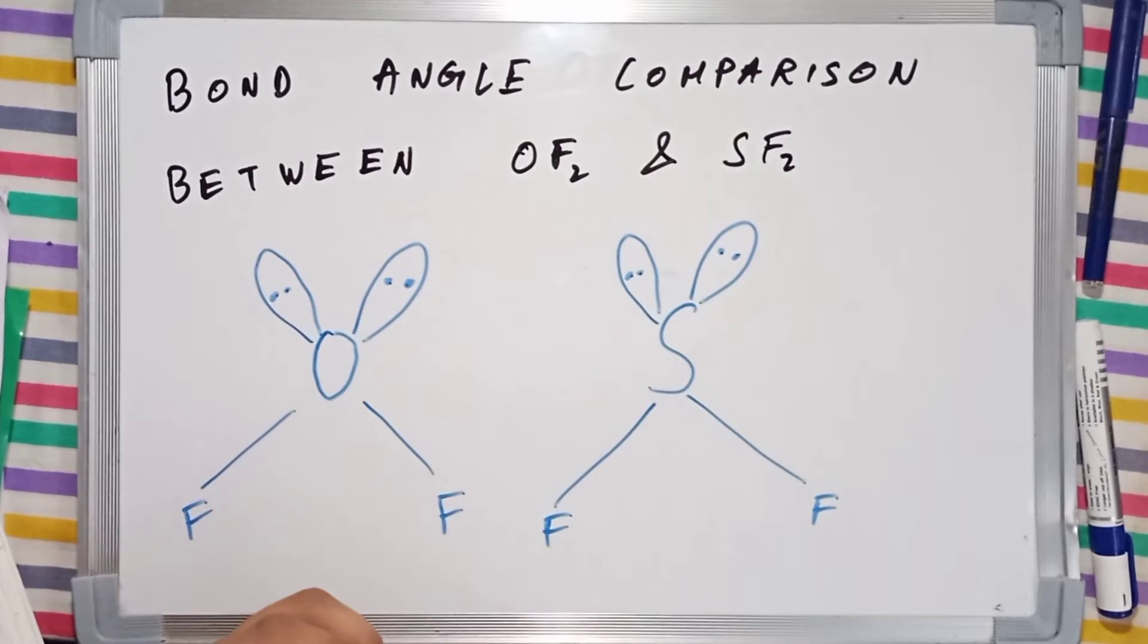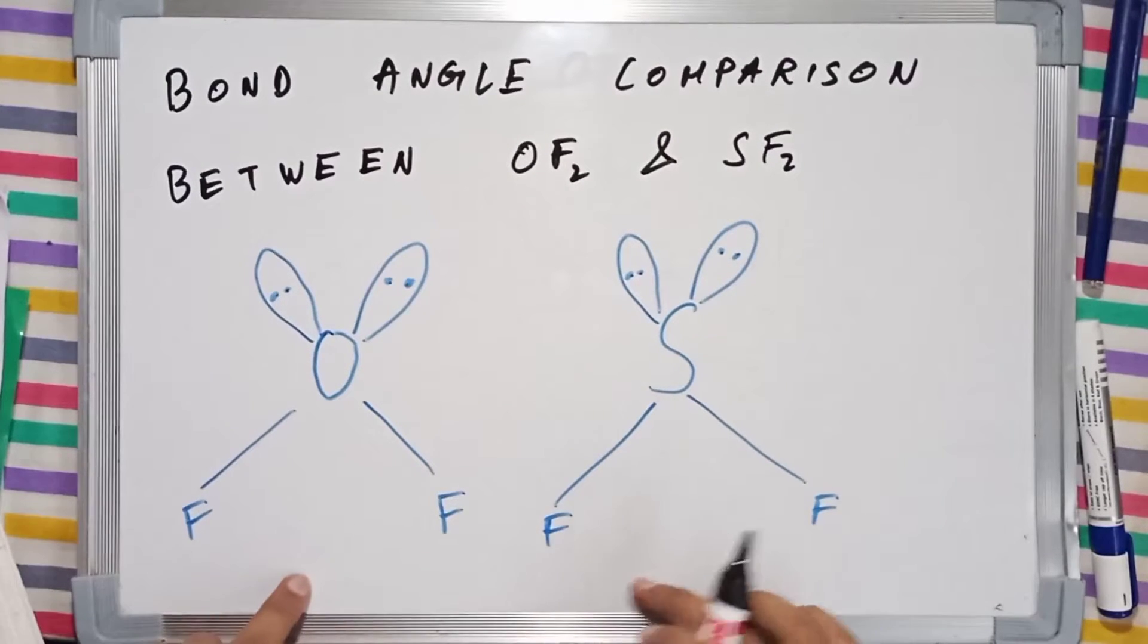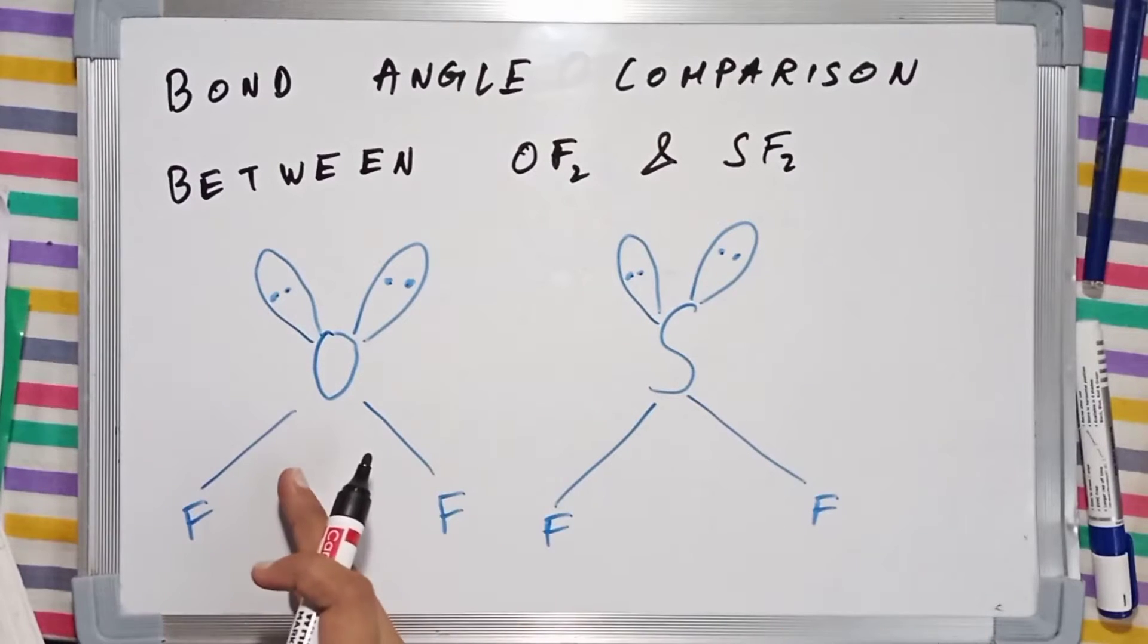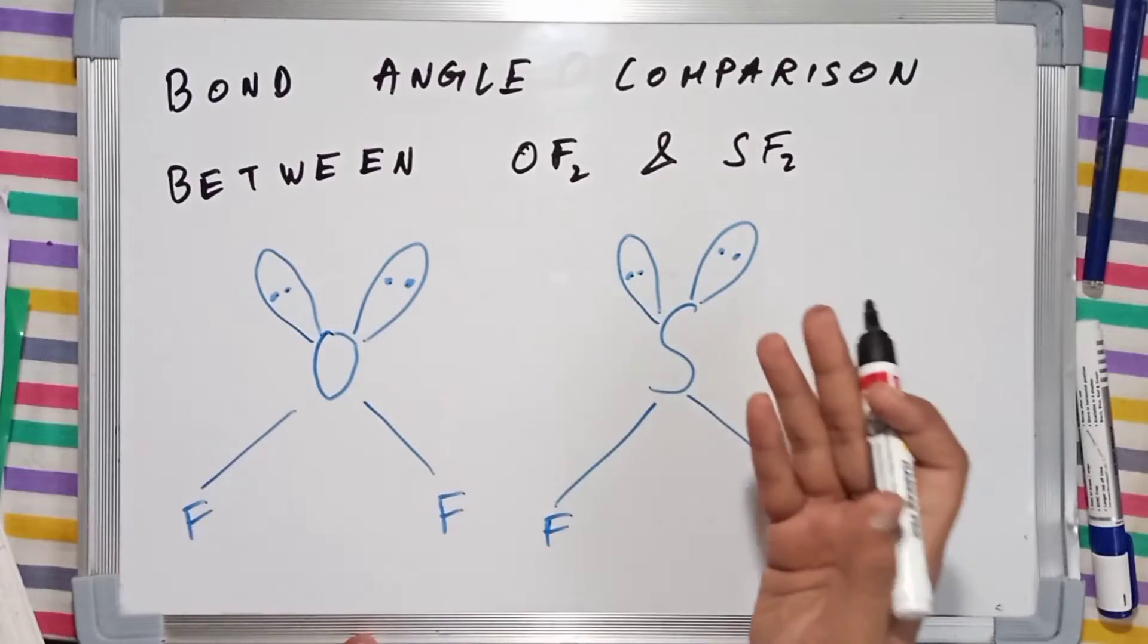We are going to compare the bond angles between OF2 and SF2 molecules. Notice the surrounding atoms of both molecules are the same, which is fluorine. So fluorine is common, and both